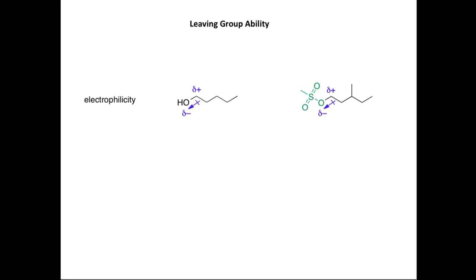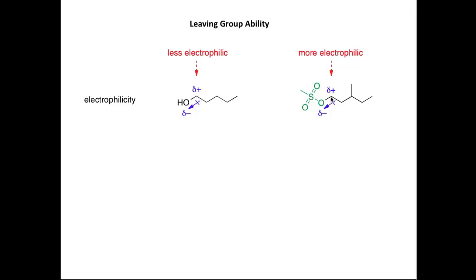Now we're going to compare the leaving group ability of an alcohol versus a mesylate. First, I'd like to comment on the electrophilicity of the carbon atoms bonded to the alcohol and the mesylate group. In the mesylate, there are additional electronegative oxygen atoms which are electron withdrawing, pulling electron density from the carbon atom via a strong minus-I effect — stronger than the minus-I effect of the alcohol group. So in a mesylate, the carbon atom attacked by the nucleophile is more electrophilic.